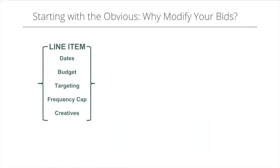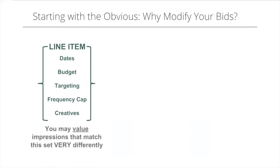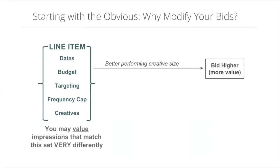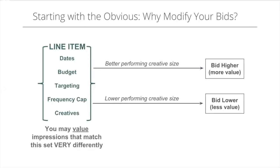If you think about a line item in our system, it's really a set of constraints — dates, budget, targeting, frequency cap, creatives. With the line item you're saying 'I want to bid on anything that matches this set.' But within that set, which can be very large, you may value impressions very differently. For example, a better-performing larger creative you may want to bid higher on, while a lower-performing smaller creative you'd bid lower.